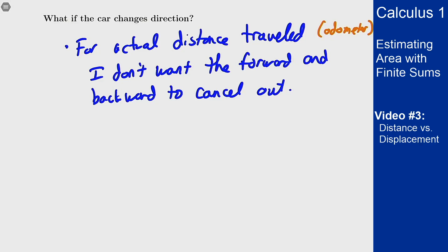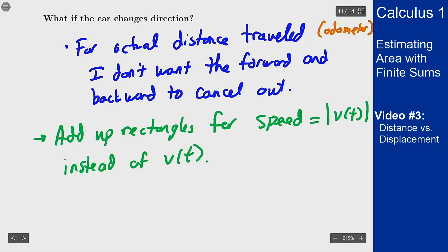Well, it means that instead of adding up rectangles for velocity, I want to add up rectangles for speed, which is the absolute value of velocity. The issue here is that v(t) has a sign, and if v(t) is negative, it's going to cancel out some of the distance that I did with the positive v(t) from before.